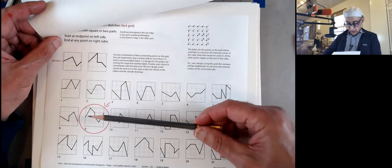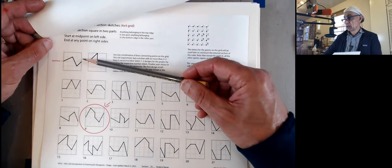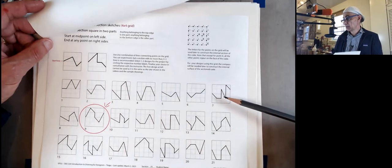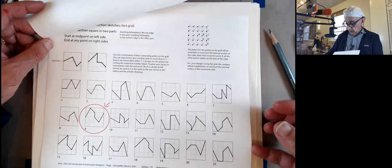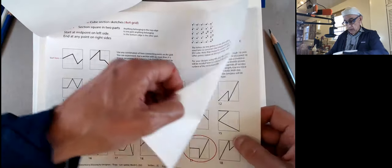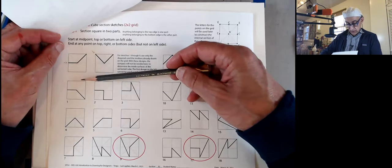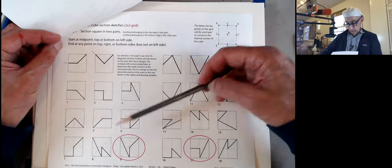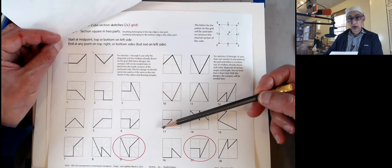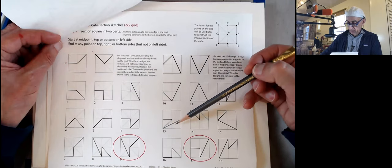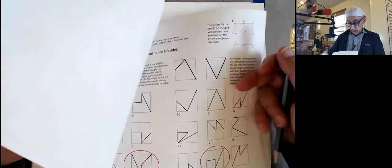The rules were that you were supposed to start in the center of the left side and move to the right side, ending anywhere on that right side. Some sections are a little too complicated to fabricate, but most of these would work. The same student had sections from the two by two grid as well. In the one through nine, we saw that some designs repeat, but this particular student managed to do all different ones. Some sections would have been hard to build because the top and bottom parts of the cube would have been hard to fit.